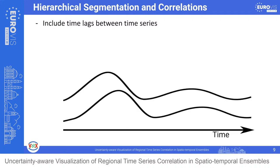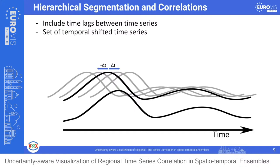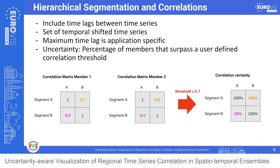For each segment at every level of detail, we calculate the mean time series for each member and store it for immediate access at interactive rates. To ensure segments are sufficiently smooth, we store the minimal and maximal pairwise correlation of associated sample points, allowing users to spot segments with strong internal variations. We also include a time lag into the correlation calculation — sometimes two time series are highly correlated but shifted. We calculate correlation values for a set of possible time lags, store the lag for the highest correlation, then calculate the percentage of members surpassing a user-defined threshold, obtaining a probability for a correlation between two segments.